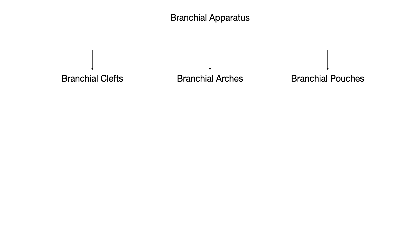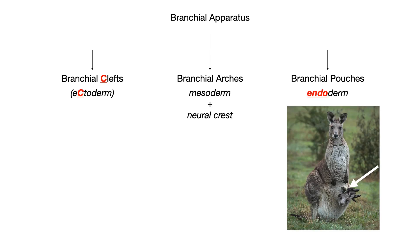Each of these three sub-groups comes from different parts of the developing embryo. The branchial clefts come from the ectoderm. The branchial arches come from a combination of the mesoderm and the neural crest. And the branchial pouches come from the endoderm. To memorize this: think of the C in cleft for the C in ectoderm. Branchial pouches makes me think of a kangaroo pouch — the inside of its skin, so endoderm. And by process of elimination, arches come from the mesoderm.